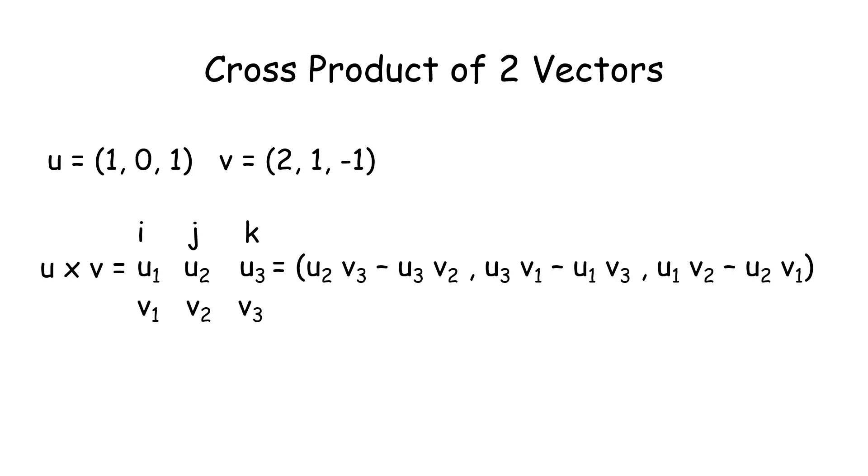And then the second part is u3 times v1 minus u1 times v3. Third section is u1 times v2 minus u2 times v1. So that is the formula to find the cross product of two vectors.